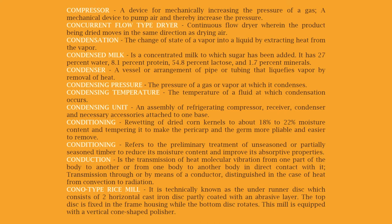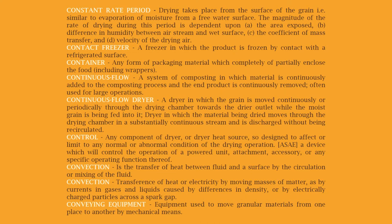Conotype rice mill: technically known as the under-runner disc, which consists of two horizontal cast iron discs partly coated with an abrasive layer; the top disc is fixed in a frame housing while the bottom disc rotates; this mill is equipped with a vertical cone-shaped polisher.